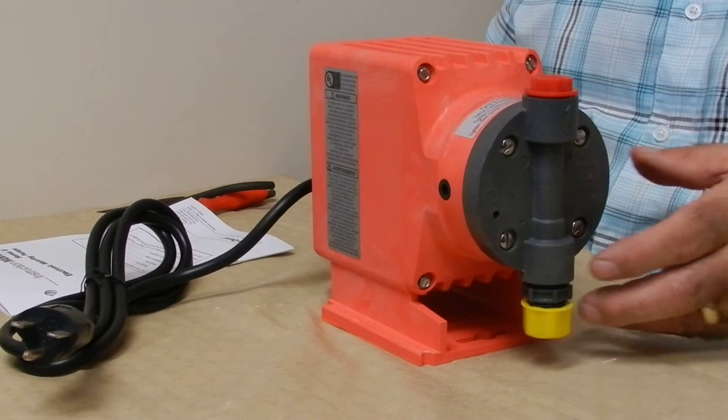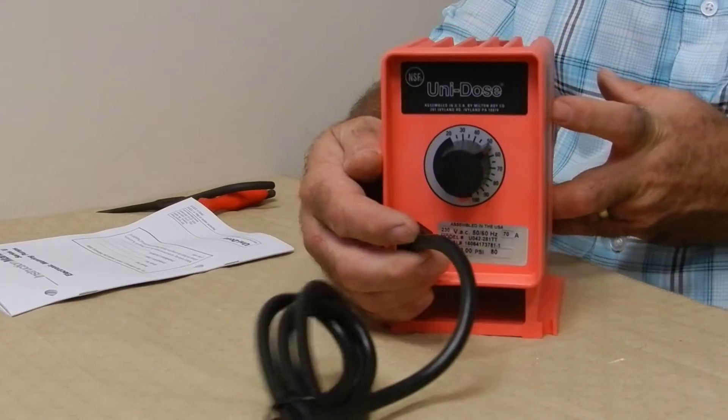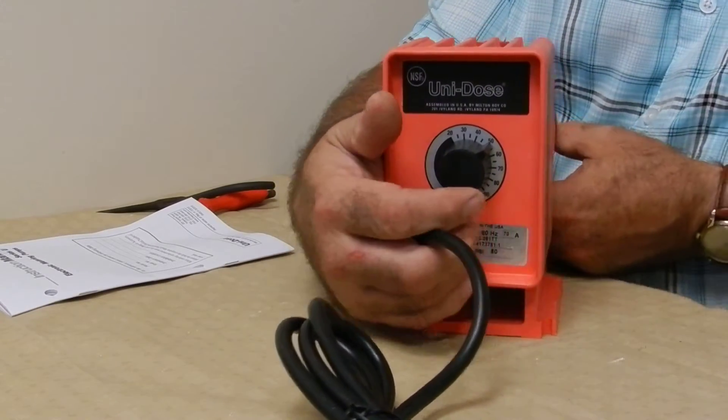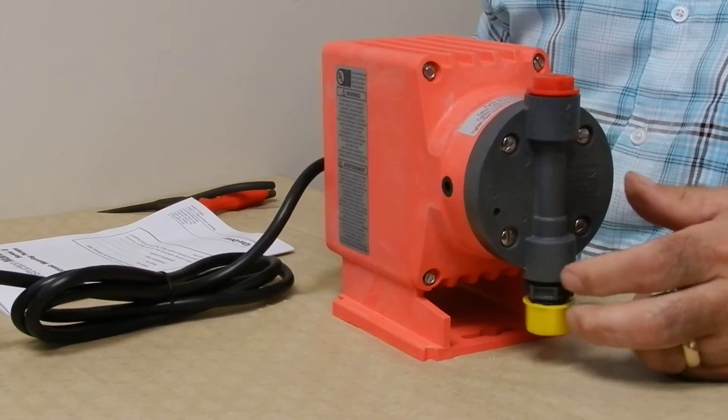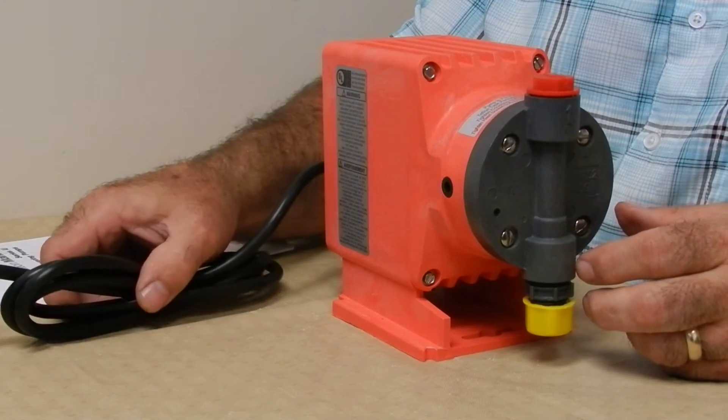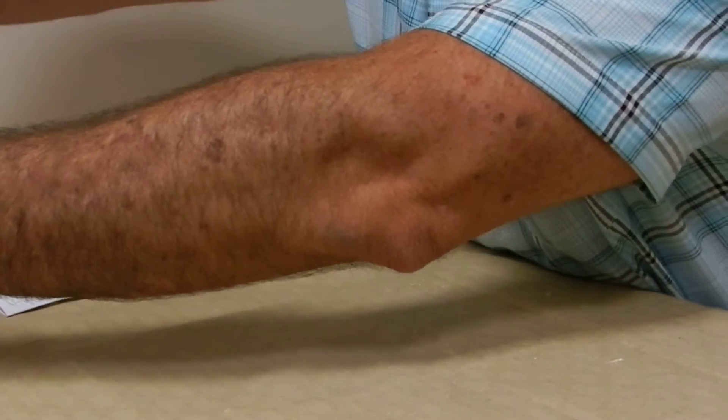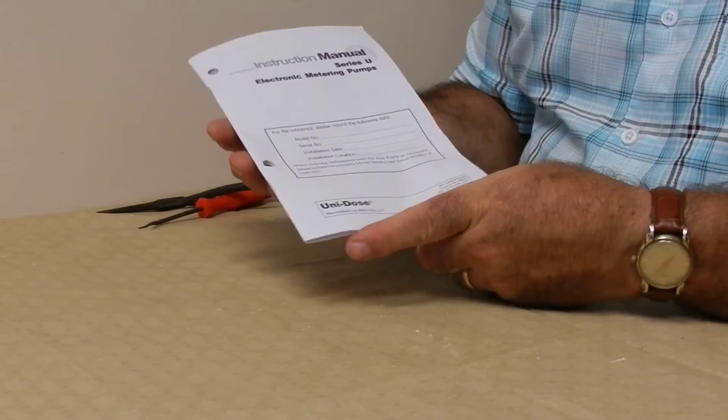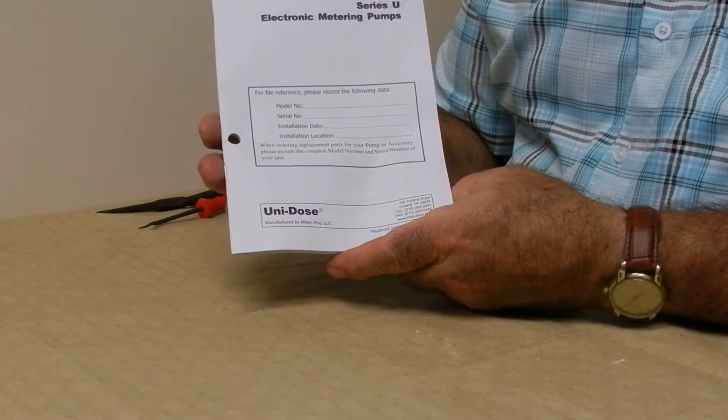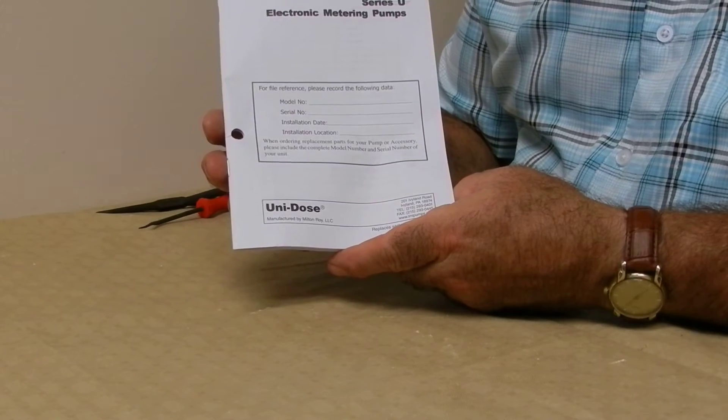This is the unidose chlorine pump. If you have this pump, you have a chlorine injector which you will need to service. Please read the book that came with the pump. If you don't have one, you can get it on our website at discountwatersupply.com.